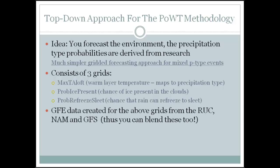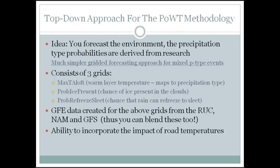Smart tools run for the methodology so you can get data from the RAP, NAM, and GFS. Using your model blend tool you can blend those together — if you like the GFS environment a little more than the NAM, you can do a two-to-one blend. You're not married to one specific model. Something new last year is that you can also incorporate the impact of road temperatures on your precipitation type — that's its own separate grid.